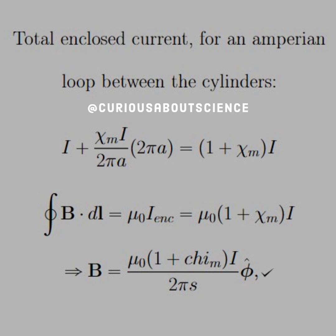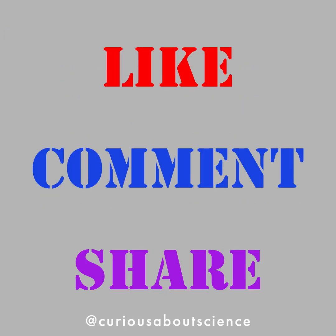Therefore, the closed integral of B dot DL is equal to mu naught I enclosed. Okay, another usefulness for an Amperian loop. And we see the right-hand side yields mu naught (1 plus chi M) I for the I enclosed. And therefore, we see that if we solve for B, we get mu naught (1 plus chi M) I over 2 pi S in the phi direction. So we're checked. We're good to go across the board.